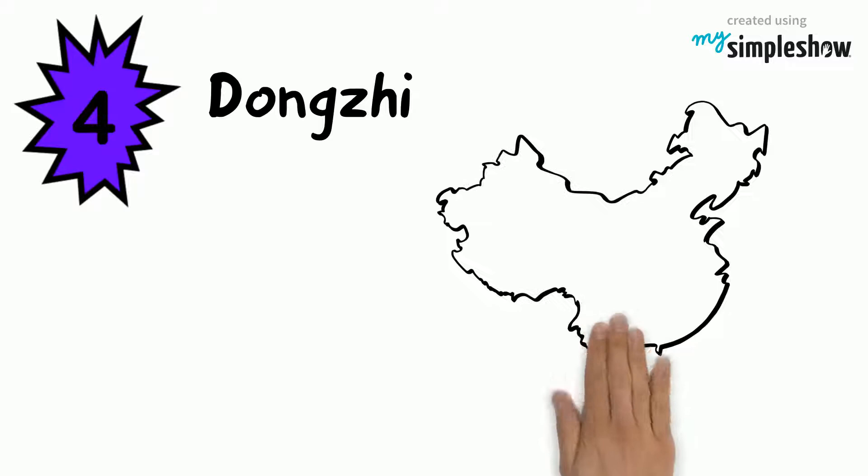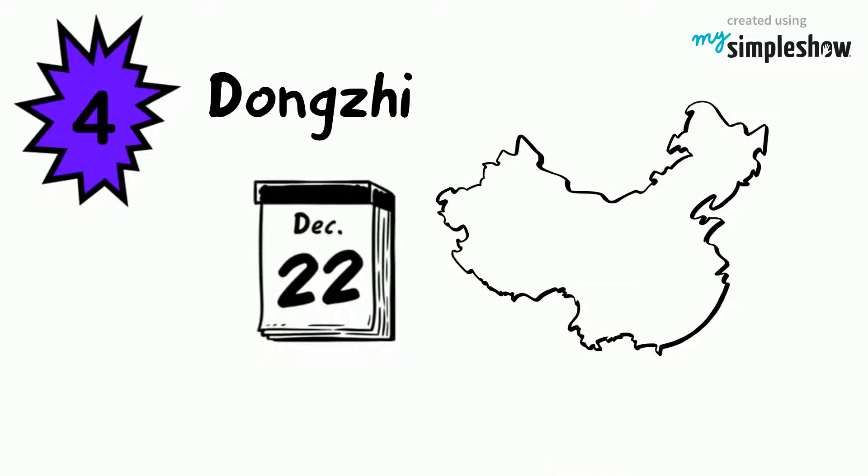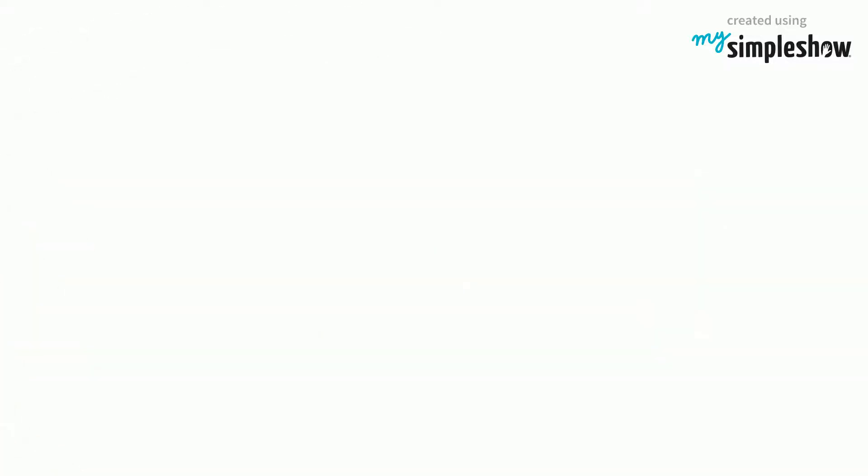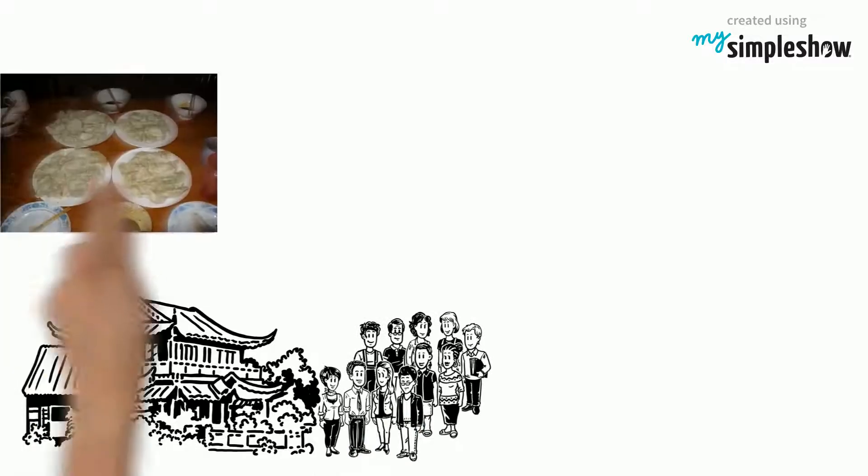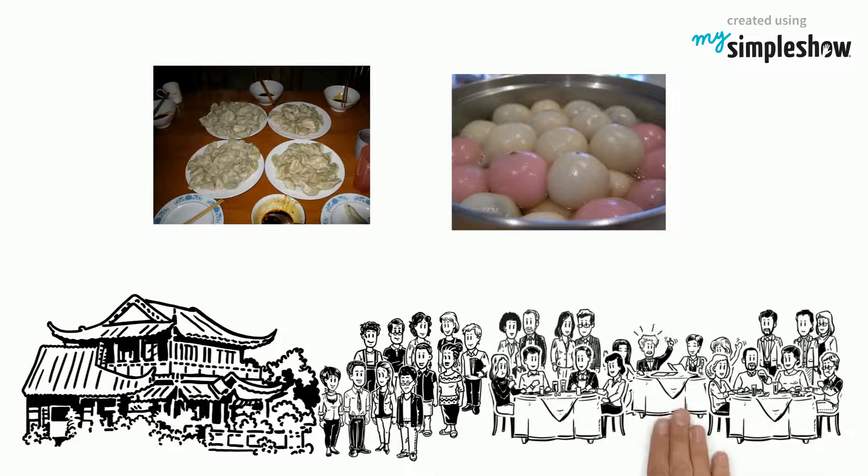Dongzi is celebrated in China on December 22nd. People worship at ancestral temples. Afterwards, they eat dumplings or rice balls at a grand reunion dinner.